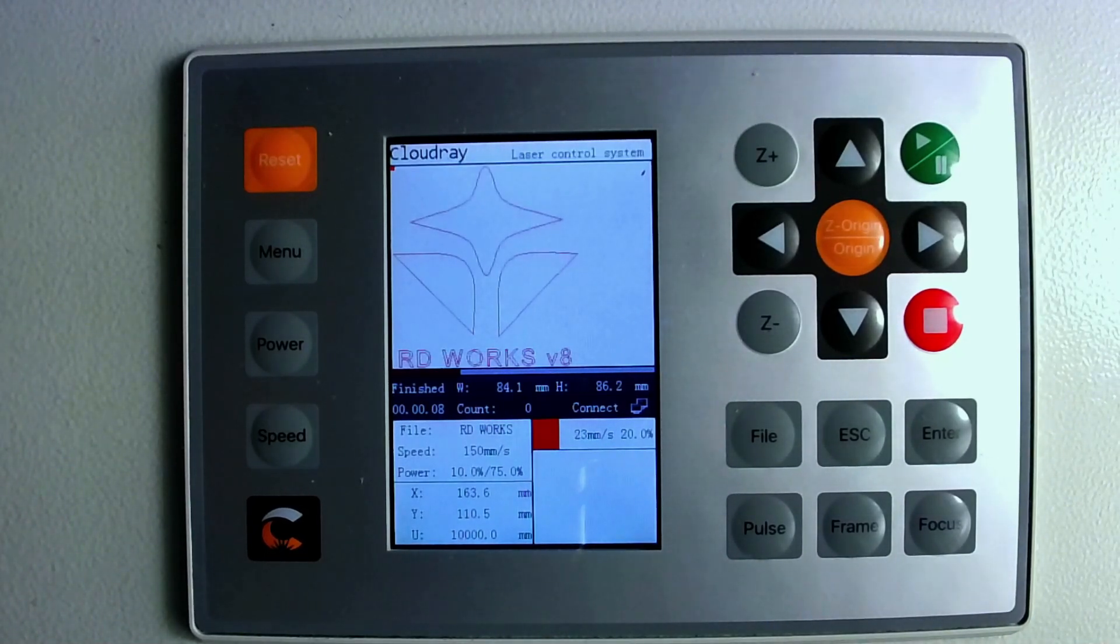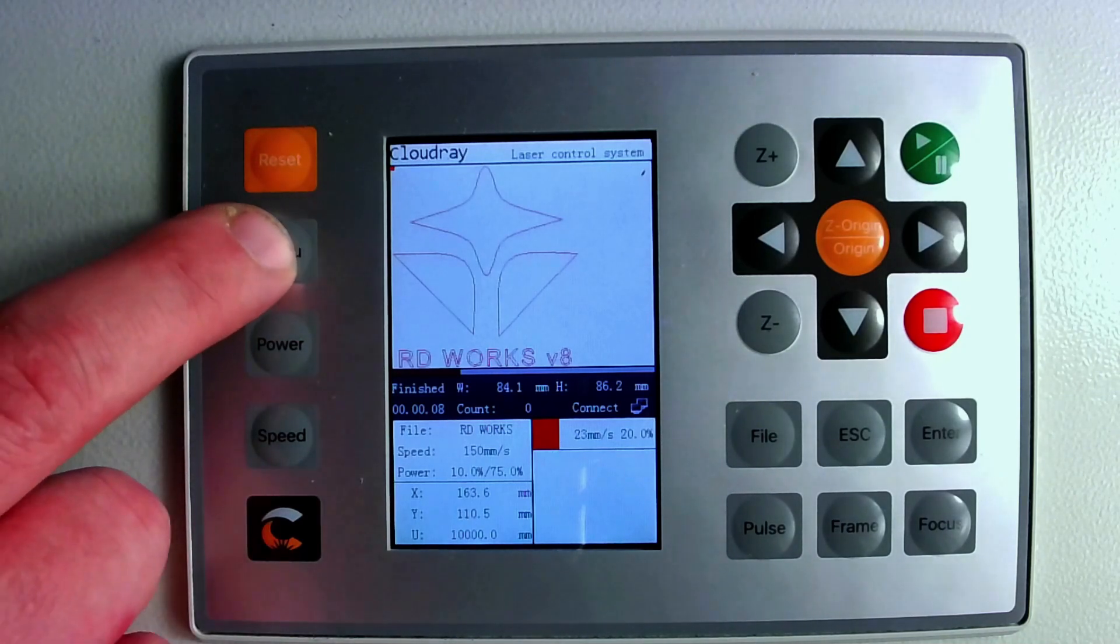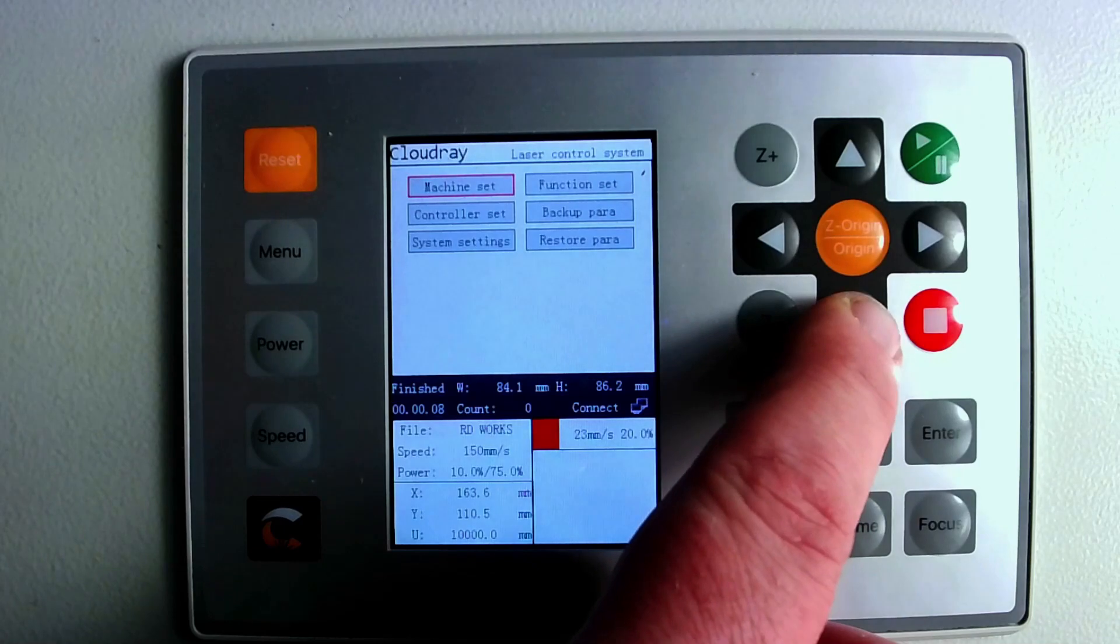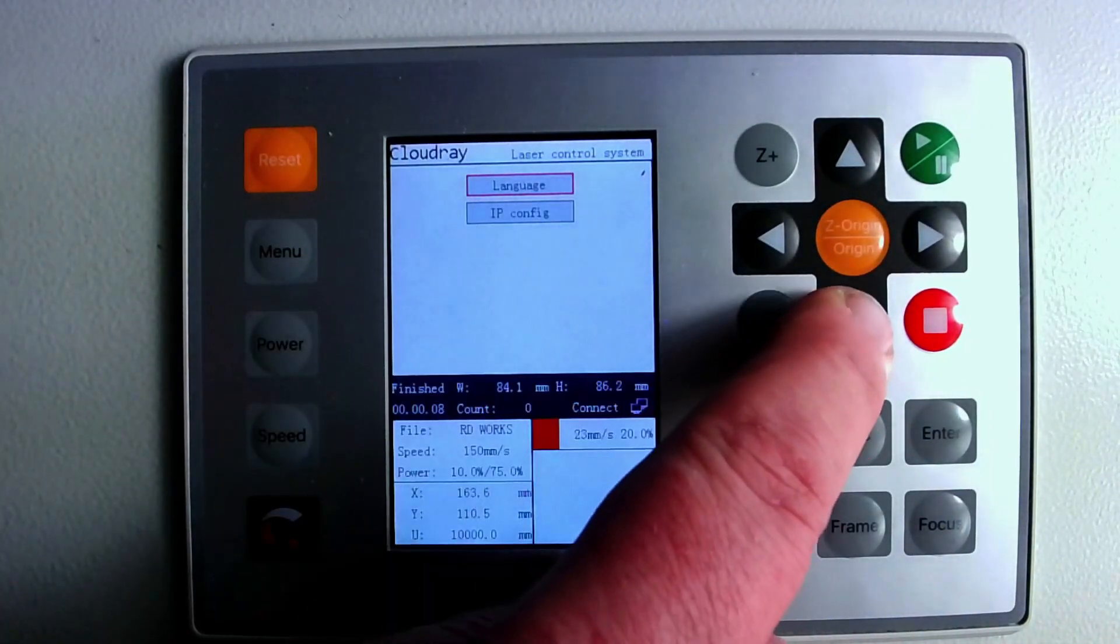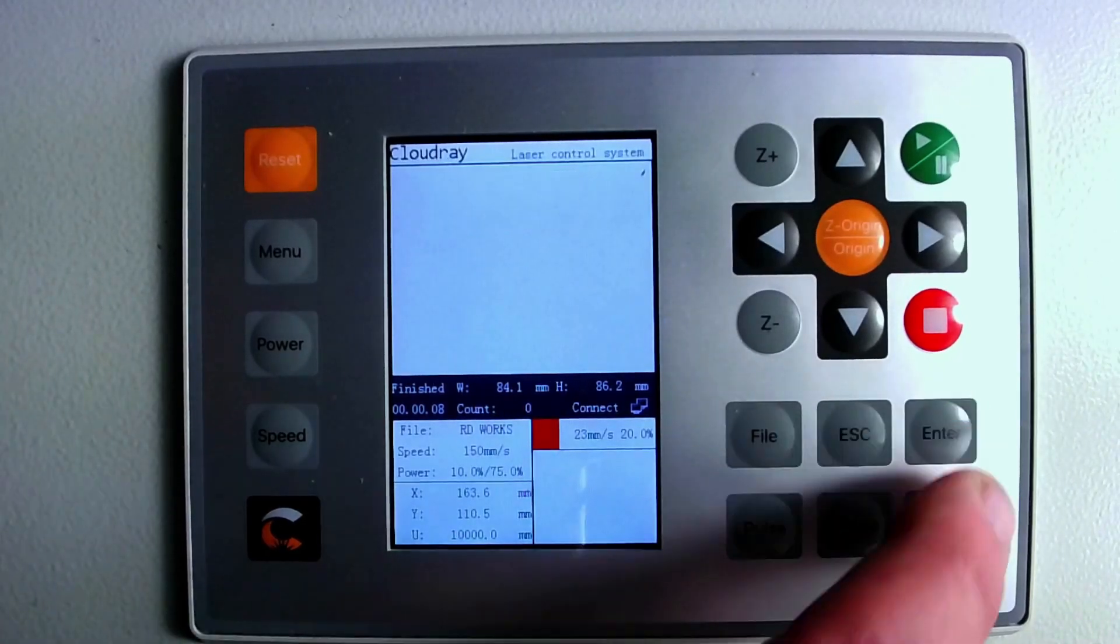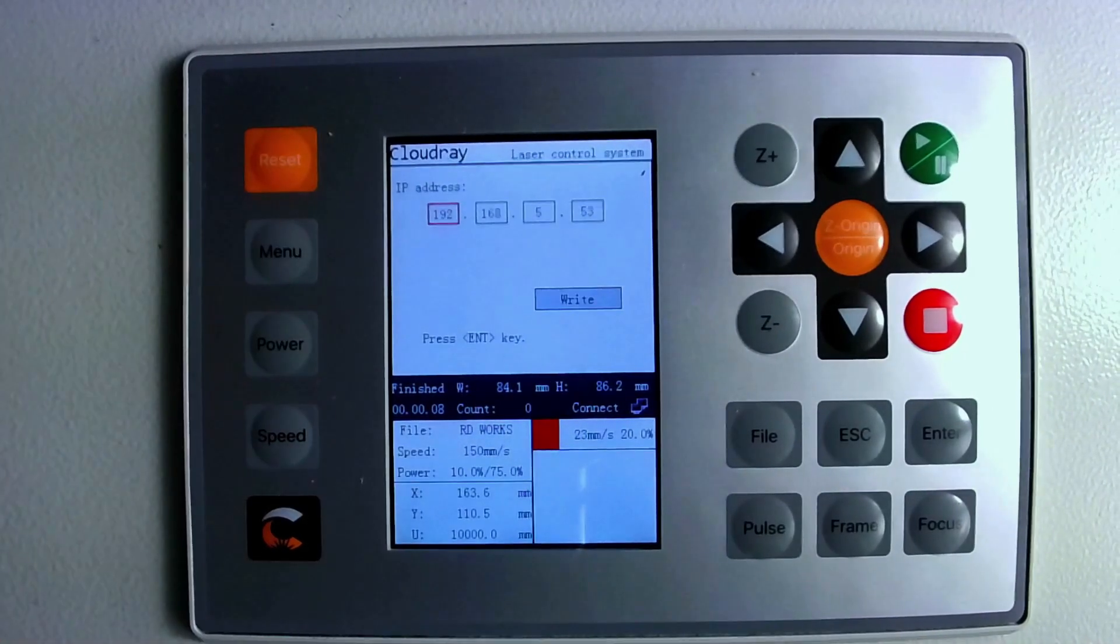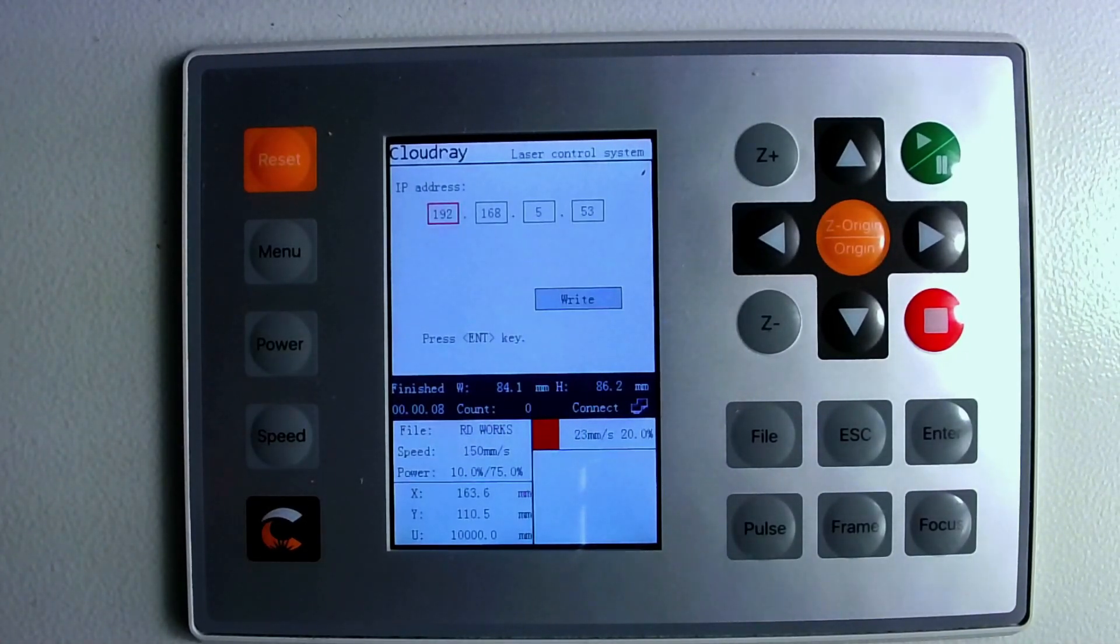If you need to configure an IP address for the controller first we go into the menu. We go down to controller settings press enter and we go down to the IP configuration and press enter. And here you can enter the IP address on the network that you want it to be and then you write that to the controller.